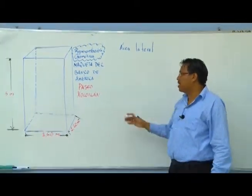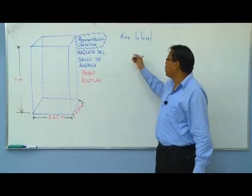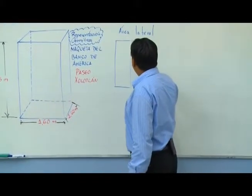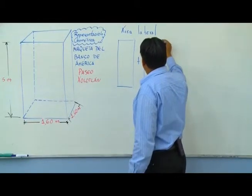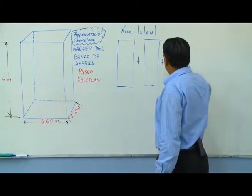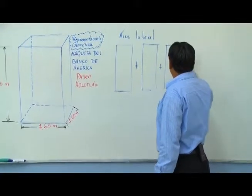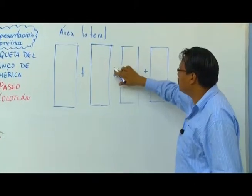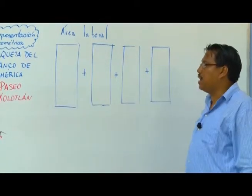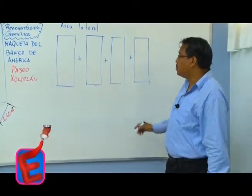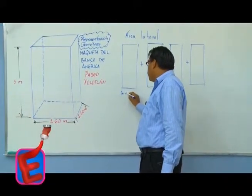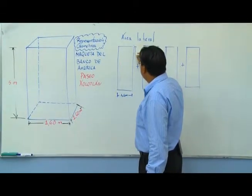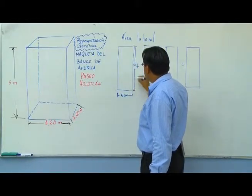Para calcular el área lateral hacemos el desarrollo del prisma. El área lateral sería la suma de las cuatro caras que lo conforman. En este caso, cada una de ellas mide 1,60 metros de base y 5 metros de altura.